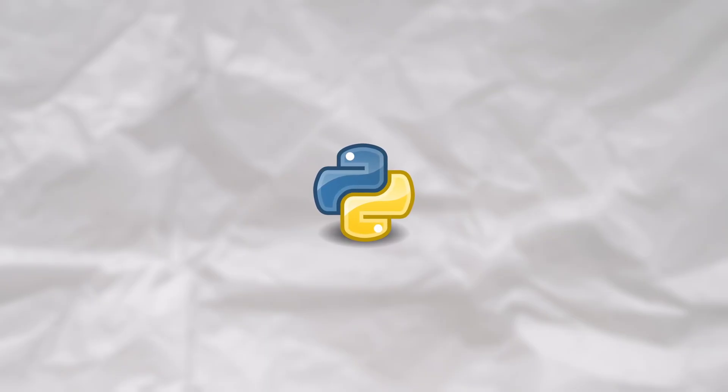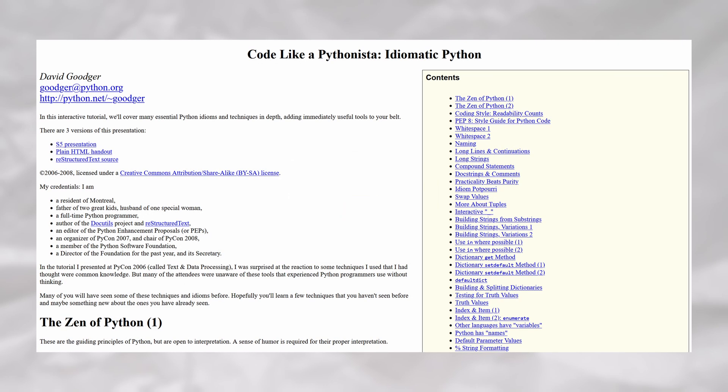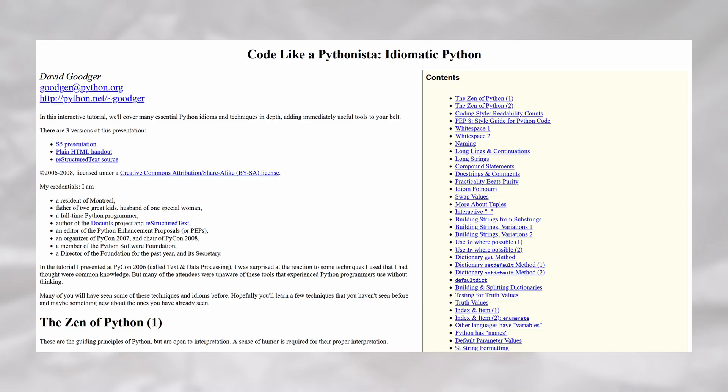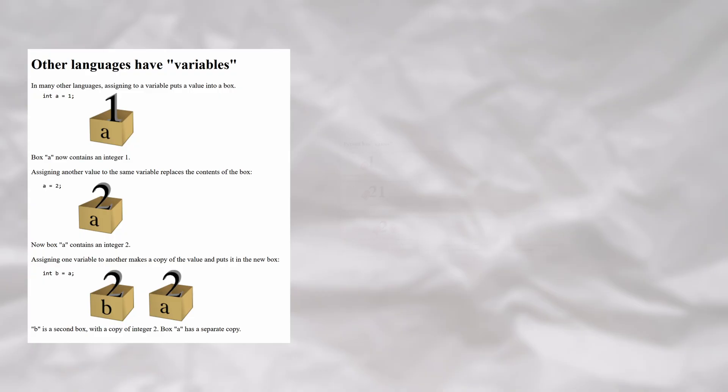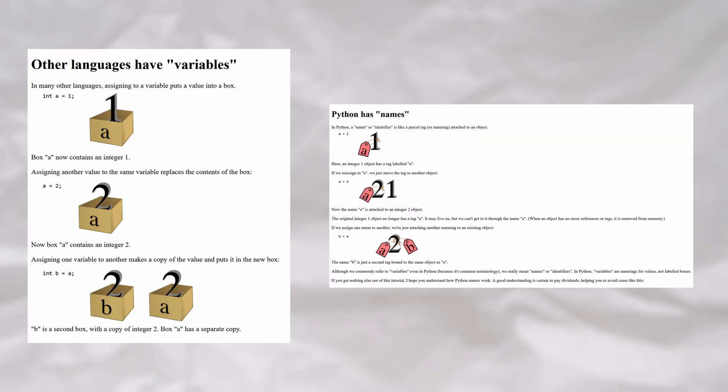The truth is that Python is neither. In fact, Python operates in a very interesting way. Let's take a look at a section of Code Like a Pythonista, Idiomatic Python, by David Goodger. They explain that while other languages have variables, Python has names instead. Let me explain.